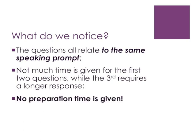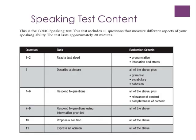You're given no preparation time. Basically, the only time you have to prepare is when the narrator actually reads the question to you. So the first thing we need to identify is what exactly they're looking for in these question types. For questions 4 through 6 and 7 through 9, they're looking at pronunciation, intonation, grammar, vocabulary, and cohesion. Today we're going to look at the two new criteria: relevance of content and completeness of content.